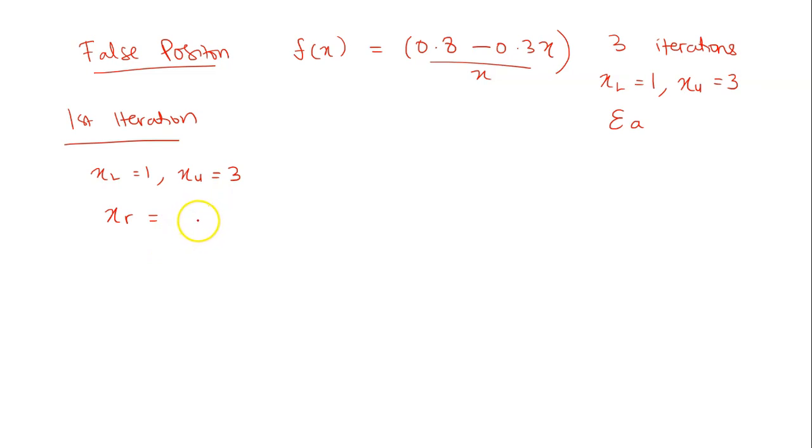It's a bit bulky. x_r equals to x_u minus f(x_u) times (x_l minus x_u) divided by f(x_l) minus f(x_u). So there are so many calculations here. You need to calculate what is f(x_u). So let's calculate first our f(x_u).